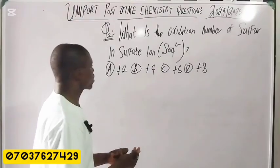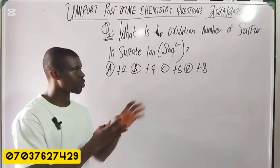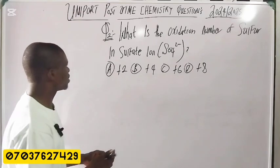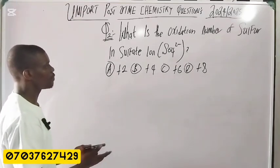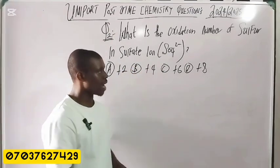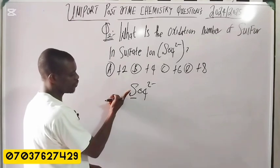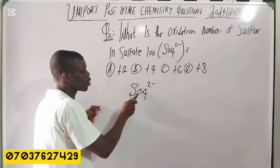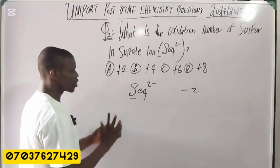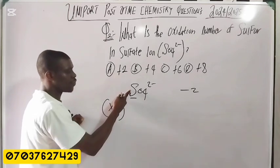Let's go to question two. Please pay attention because these are topics you really want to master. Question two: what is the oxidation number of sulfur in the sulfate ion? They are asking about the sulfate ion SO4²⁻, and you need to find the oxidation number — let's call it x — for sulfur.